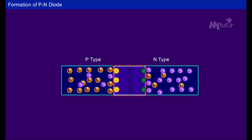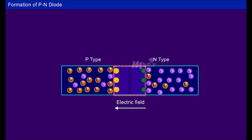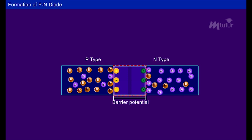The depletion region is also called the space charge region. It contains immobile or fixed ions which are electrically charged, so no more charge carriers can cross the junction. Due to immobile charge carriers, there exists an electric field across the junction, creating a potential difference called the barrier potential or cut-in voltage. Barrier potential for silicon is 0.7 volts, whereas for germanium it is 0.3 volts.